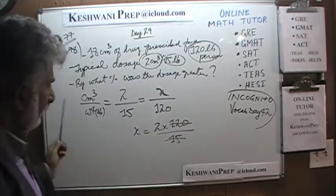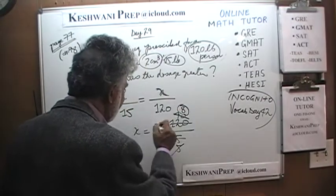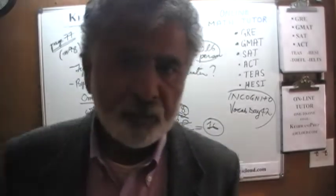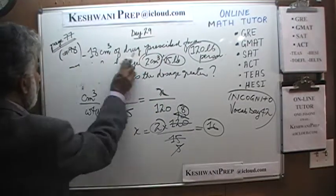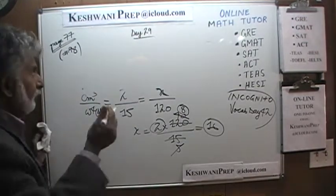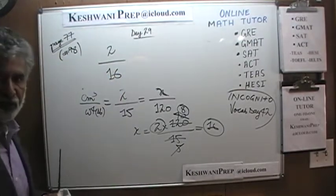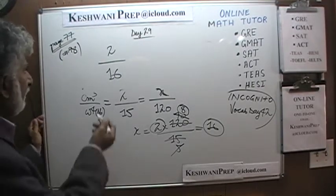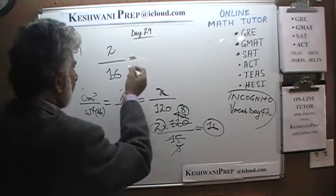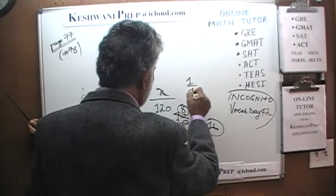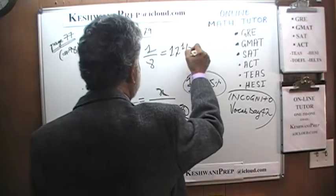Let's divide top and bottom by 3: 15 becomes 5, 120 becomes 40. Divide again by 5: we get 8 times 2, which is 16. So this patient should have been given 16 cubic centimeters of the drug. Instead, the patient was given 18 cubic centimeters — 2 cubic centimeters more than what should have been given. So 2 as a percentage of 16 is 2 over 16, which is 1 over 8. We know 1 quarter is 25 percent, so 1 eighth is half of that: 12 and a half percent.